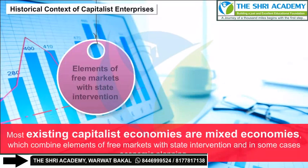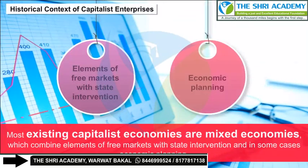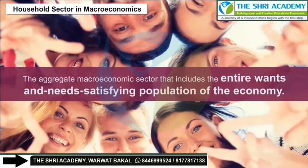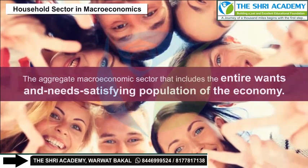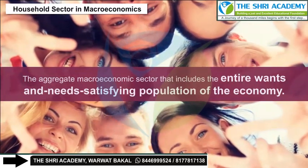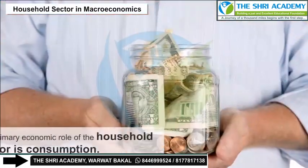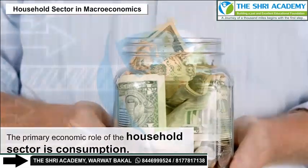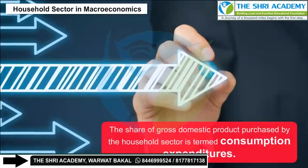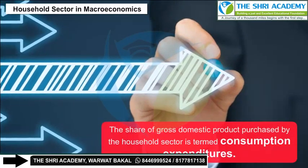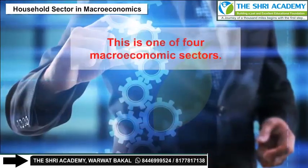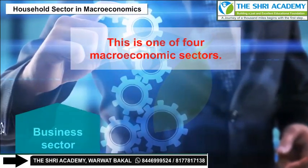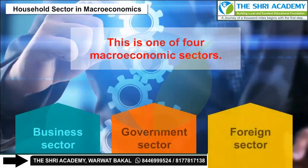Most existing capitalist economies are mixed economies which combine elements of free markets with state intervention and, in some cases, economic planning. Household sectors in macroeconomics: the aggregate macroeconomic sector that includes the entire wants and needs satisfying population of the economy. The primary economic role of the household sector is consumption. The share of gross domestic product purchased by the household sector is termed consumption expenditures. This is one of four macroeconomic sectors; the other three are the business sector, government sector and foreign sector.